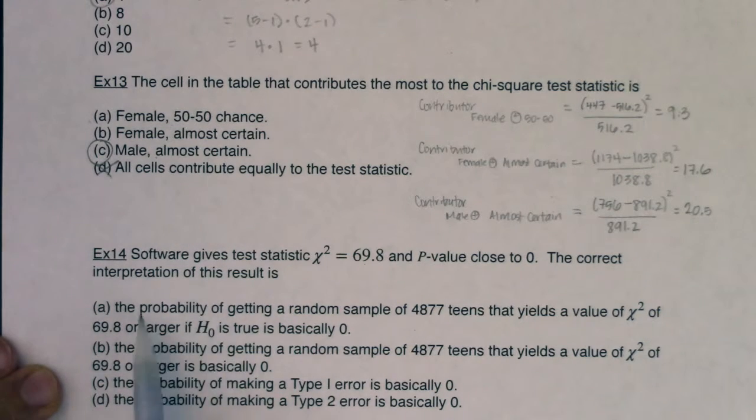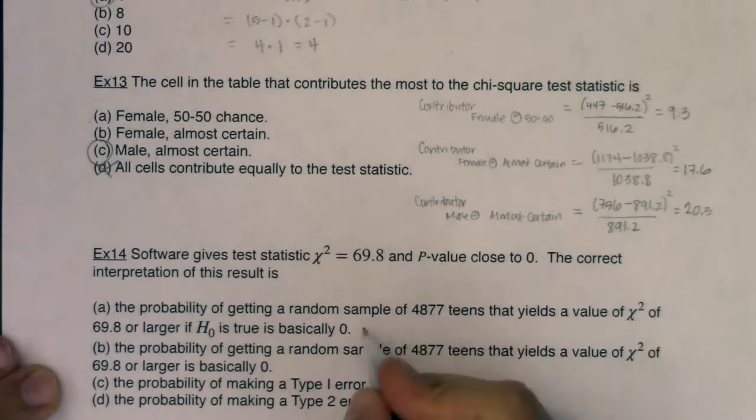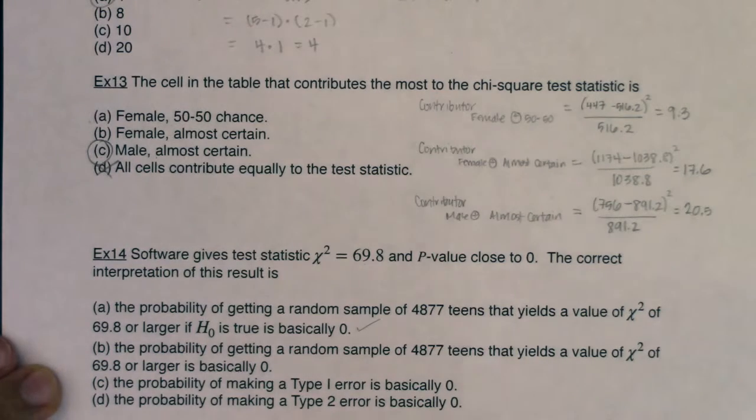The interpretation of this. The probability of getting a random sample of 4,877 teens that yields a value of chi-squared of 69.8 or larger, so, or more extreme, if the null is true is basically zero. Yeah, that's it. That's exactly what the p-value is saying. Let's compare that though. Let's make sure we've got this. The probability of getting a random sample of 4,877 teens that yields a value of chi-squared of 69.8 or larger is basically zero. So if I am comparing and contrasting these, the key phrase here is if the null is true. And that's a huge part of the interpretation of the p-value. That's our basic assumption. So this is a much better written sentence than this one.